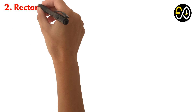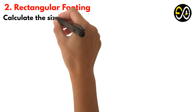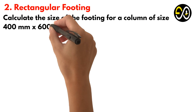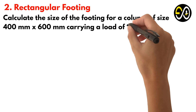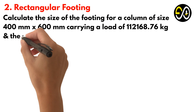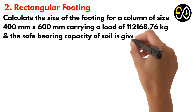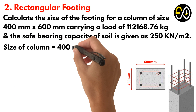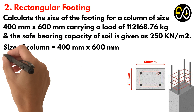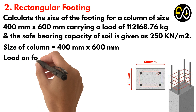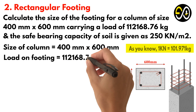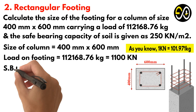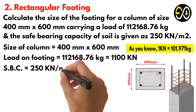Problem 2: Rectangular Footing. Calculate the size of the footing for a column of size 400 mm by 600 mm carrying a load of 112,168.76 kg, and the safe bearing capacity of soil is given as 250 kN per square meter. Size of column equals 400 mm by 600 mm. Load on footing equals 112,168.76 kg, equals 1,100 kN. Safe bearing capacity equals 250 kN per square meter.